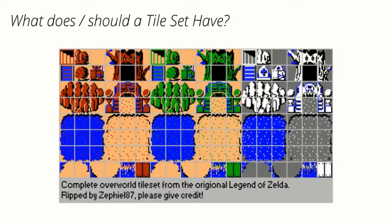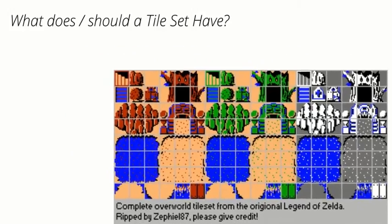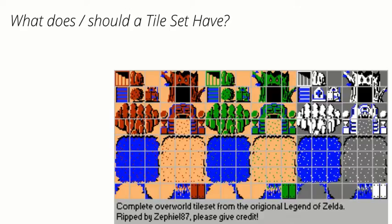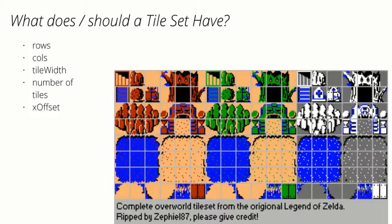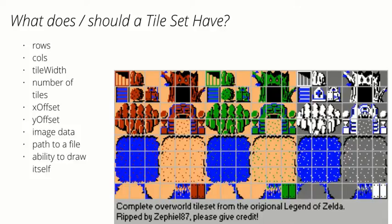What should a Tileset have? Let's look at a list. A Tileset should have rows, columns, tile width, and the total number of tiles. When dealing with the borders, we need to know how thick they are — there are horizontal and vertical lines, so we'll call that an x-offset and a y-offset to avoid accidentally copying those borders into our game. A Tileset should also have image data and a path to a file so we can load the image.